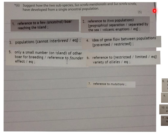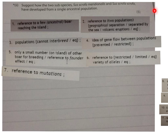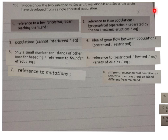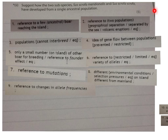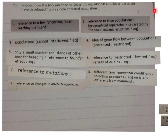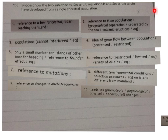For the sixth mark, refer to the fact that there is a restricted or limited variety of alleles on the island. For the seventh mark, reference to mutations — the two different species may have different mutations taking place in their specific allele frequencies. For the eighth mark, different environmental conditions and selection pressures on each island would lead to a different set of adaptations.